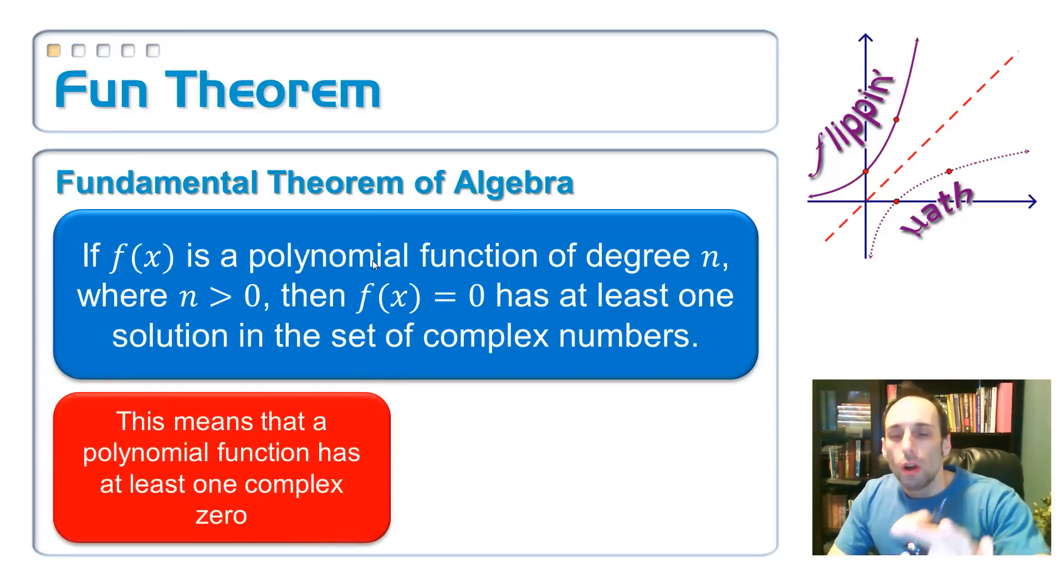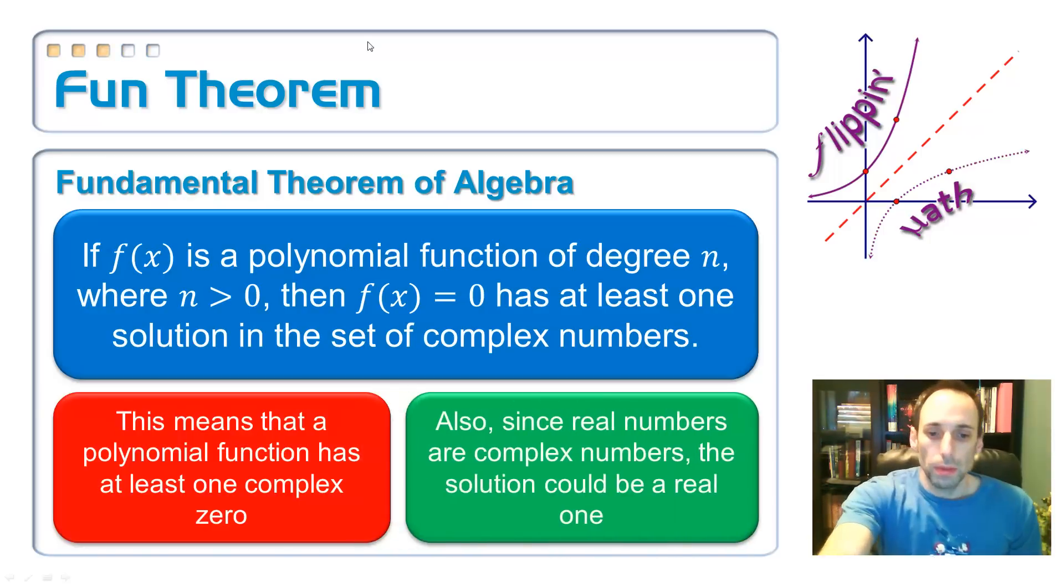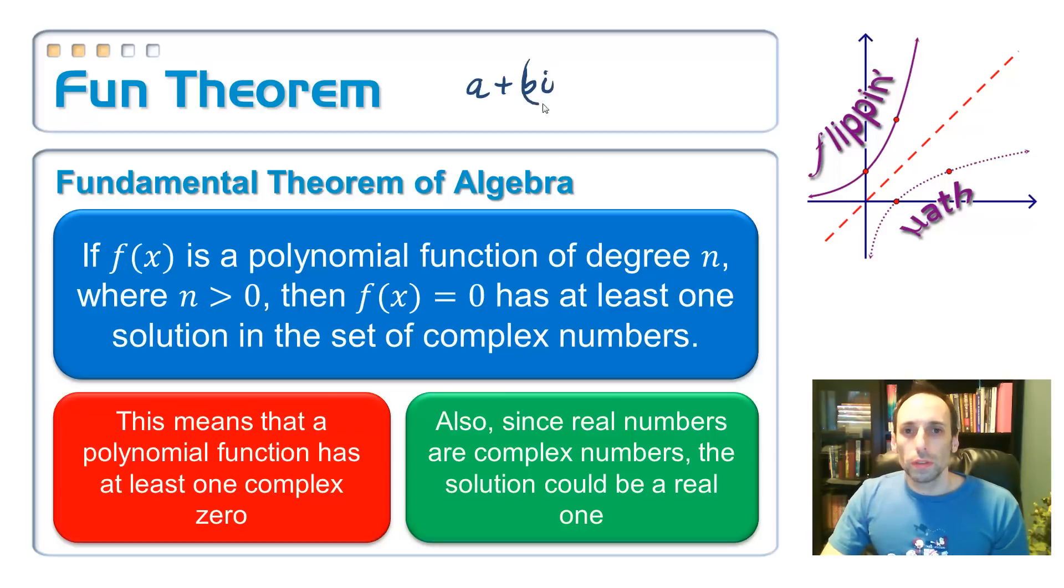Well, so all this is saying, basically, you have at least one complex solution. That's what this is saying. Any nth degree polynomial has at least one complex solution. And, well, since real numbers, every single real number is a complex number, it could be a real solution. So, remember, complex goes like this, a plus bi. Real ones are whenever b is equal to zero. It doesn't seem very useful.